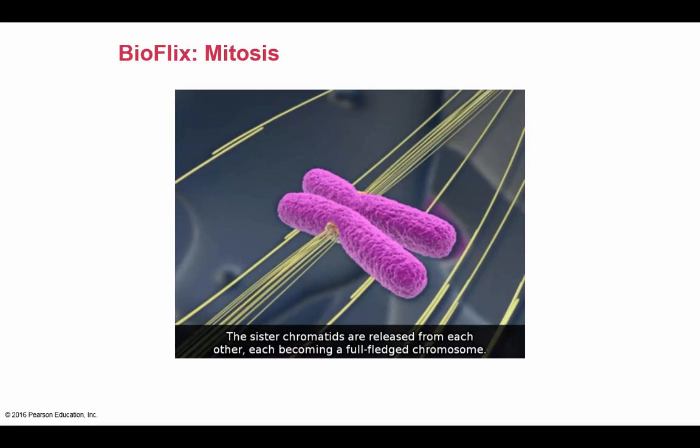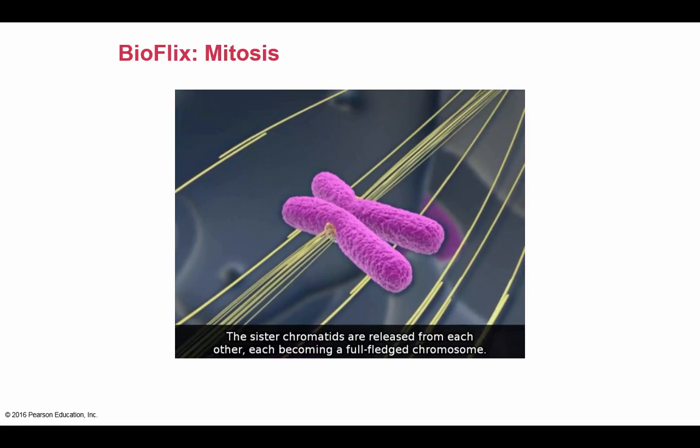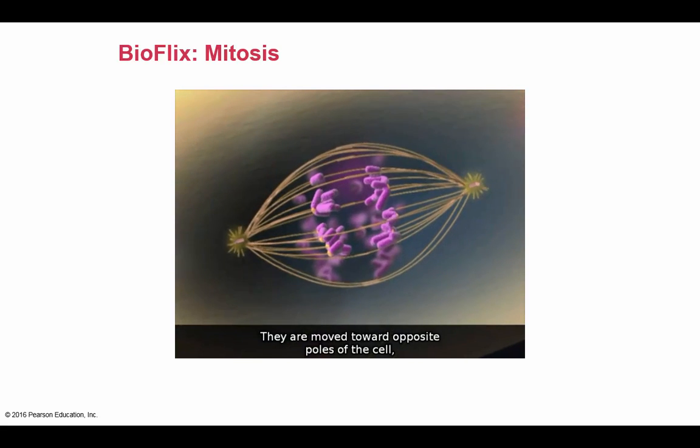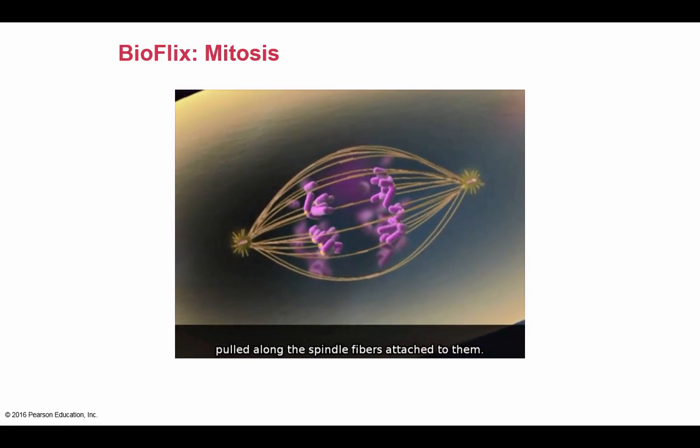The sister chromatids are released from each other, each becoming a full-fledged chromosome. They are moved toward opposite poles of the cell, pulled along the spindle fibers attached to them.